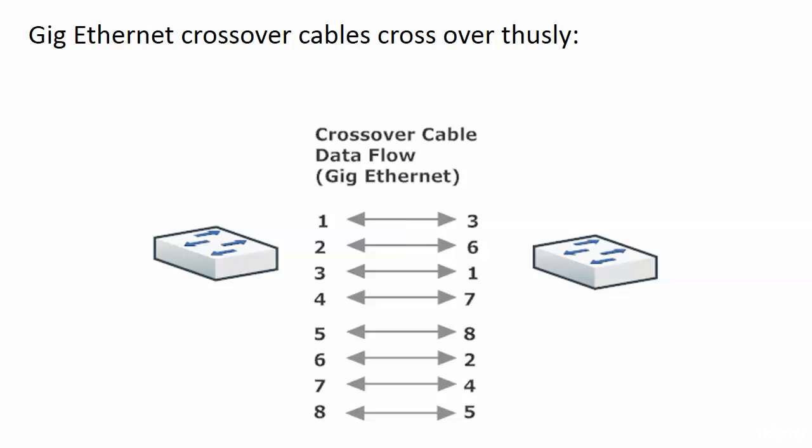Now if you built a GigEthernet crossover cable, it would look like this. And you see the way the wires cross from one end to the other: 1 to 3, 2 to 6, 3 to 1, 4 to 7, and then 5 to 8, 6 to 2, 7 to 4, 8 to 5. If you wanted to memorize this, great. If you put them together and you know them, even better. It's not something I would really be concerned about for the exam, but here's a real-world note that I want to give you as far as this goes.